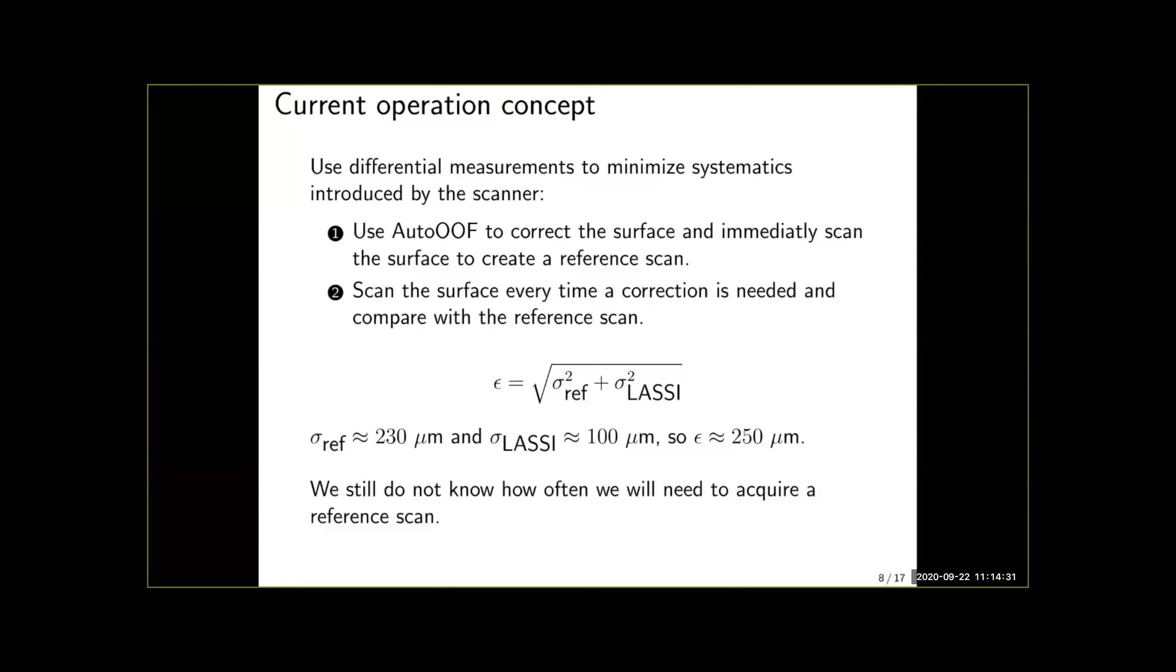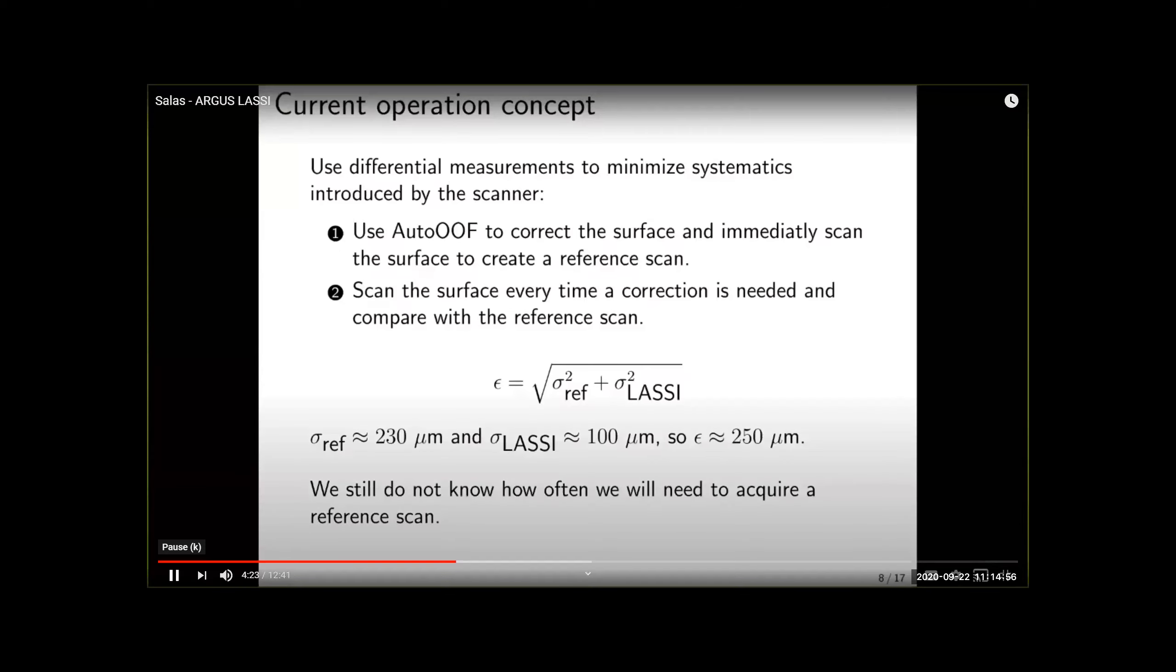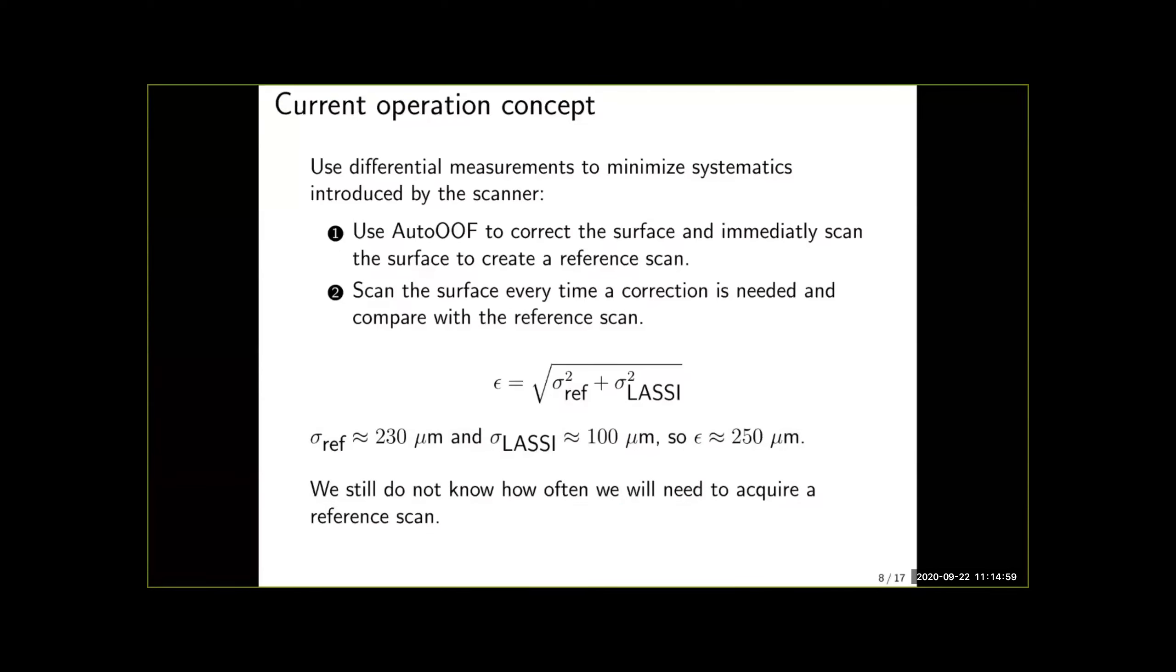For autofocus holography we know that the surface error that we can reach is roughly 230 microns and from the experiments we have been carrying with LASI we have that the surface error it will additionally introduce is of the order of 100 microns so we can expect that the total surface error using this method is going to be of the order of 250 microns.